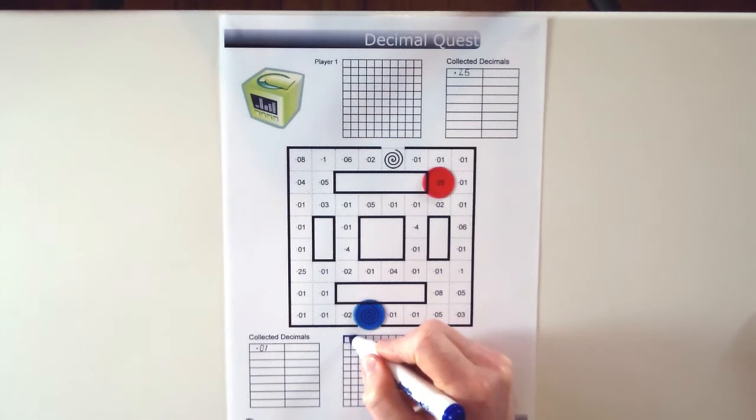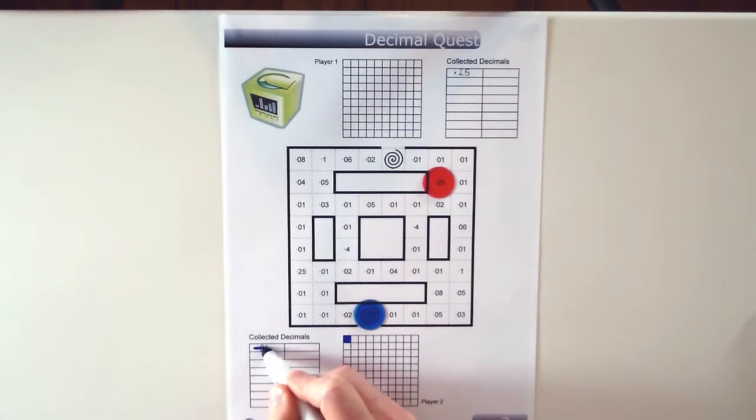So when a player's on the little warp gate, they can take their decimals, cross them out from the collected decimals area and put them in the grid.